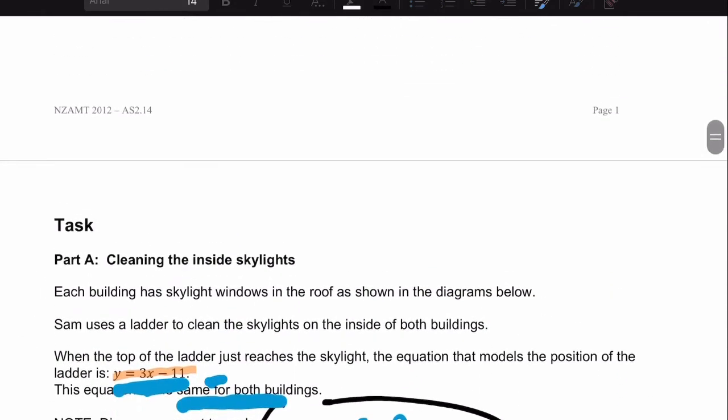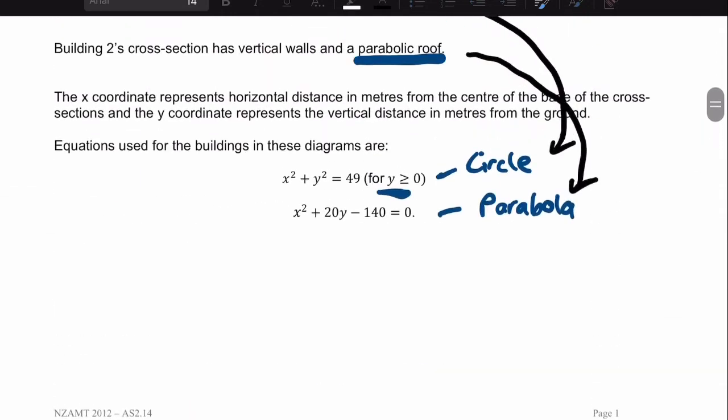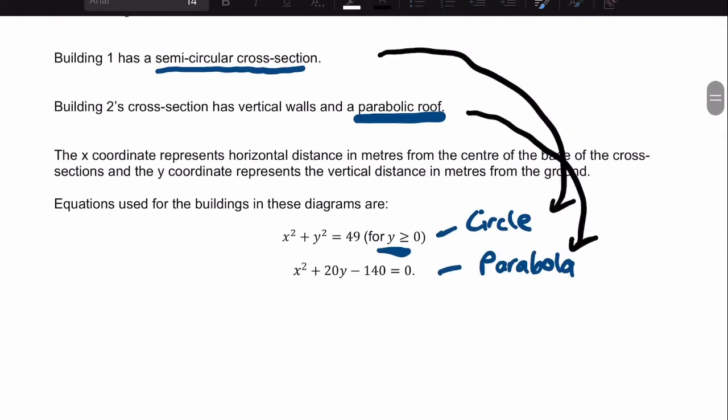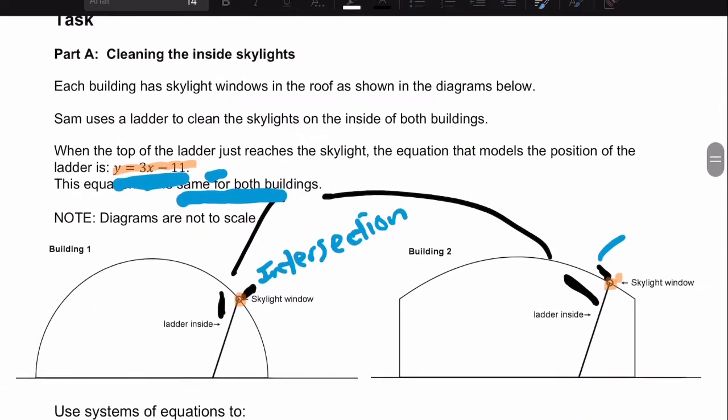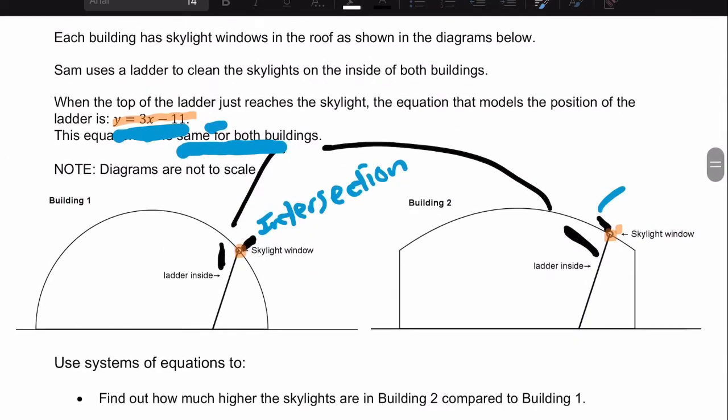We already done part A and just to recap, we identified two equations, one for the circle and one for the parabola. And we have found the coordinates of both intersections in building 1 and building 2.